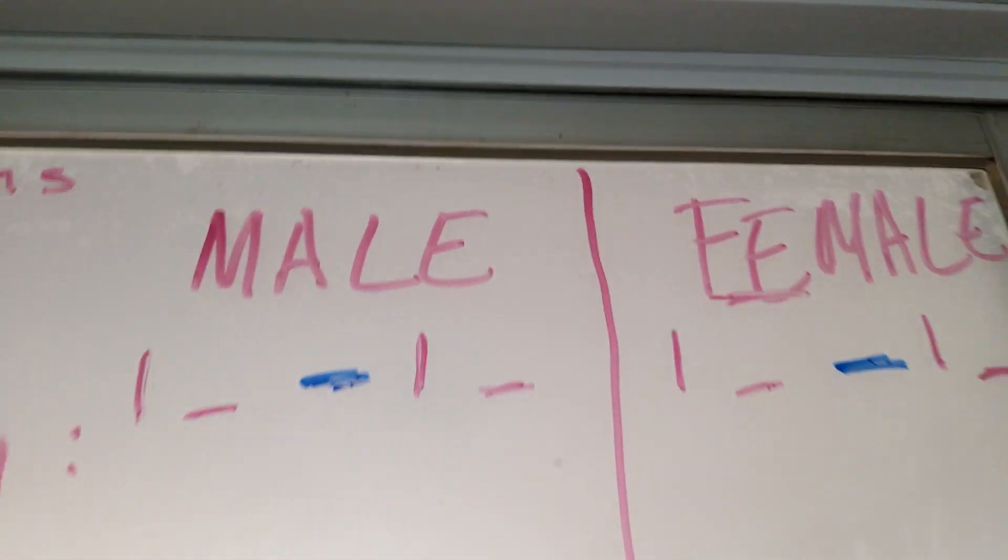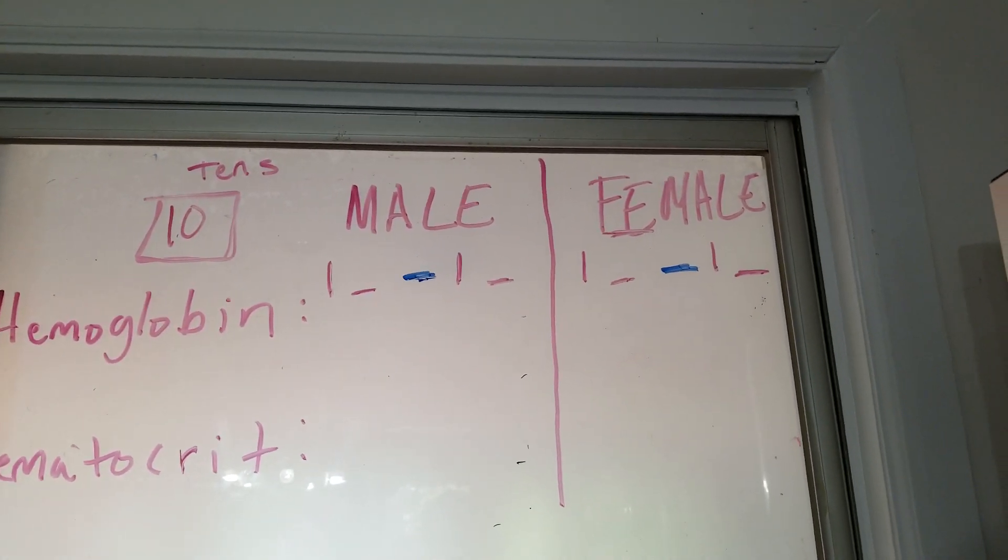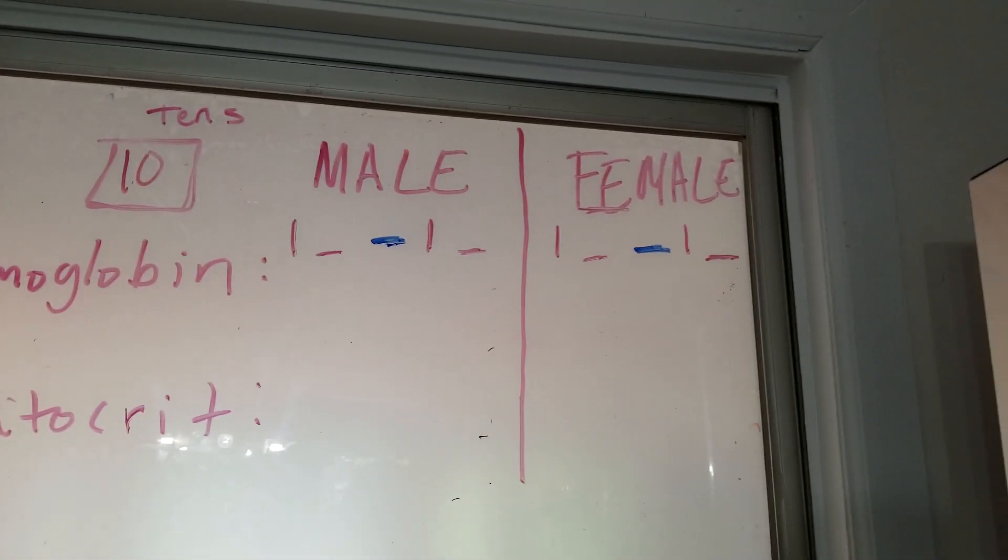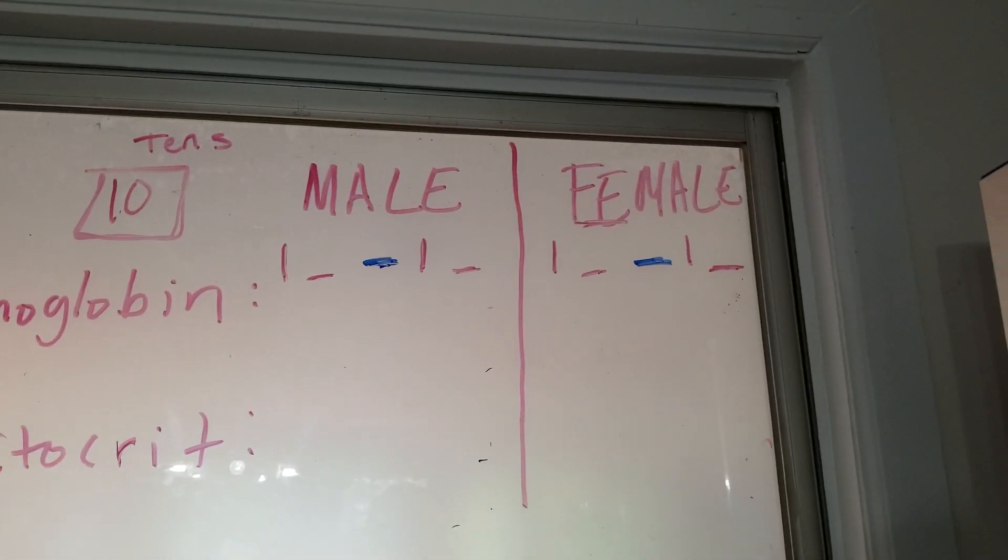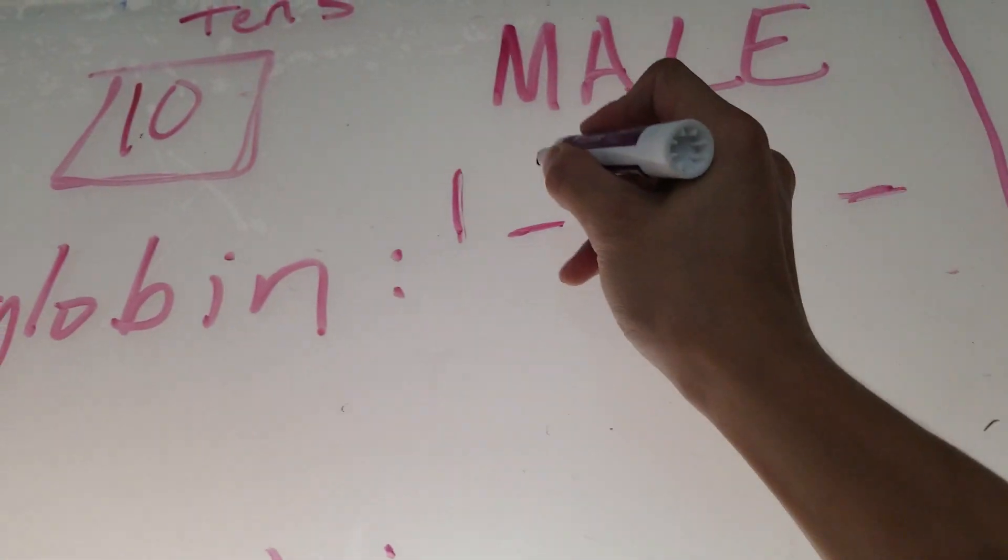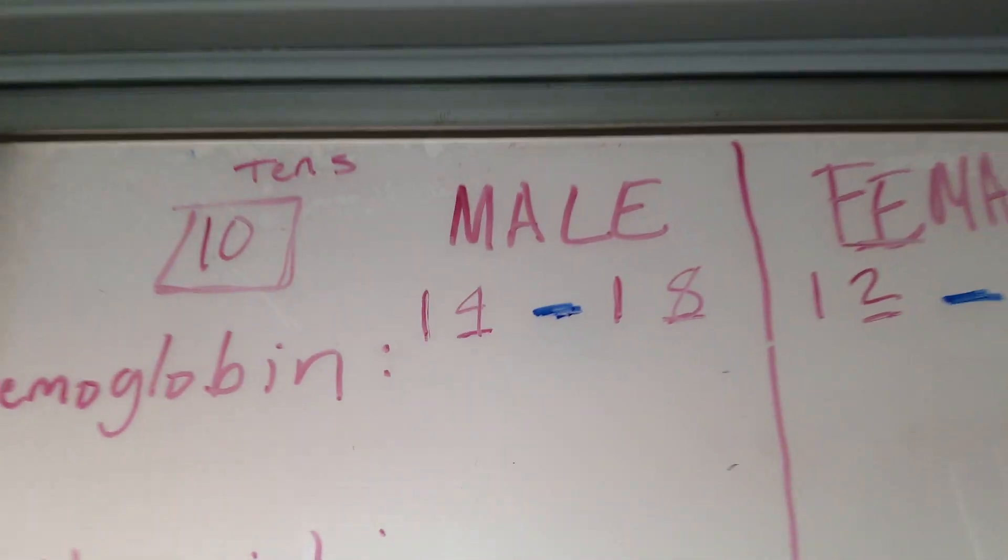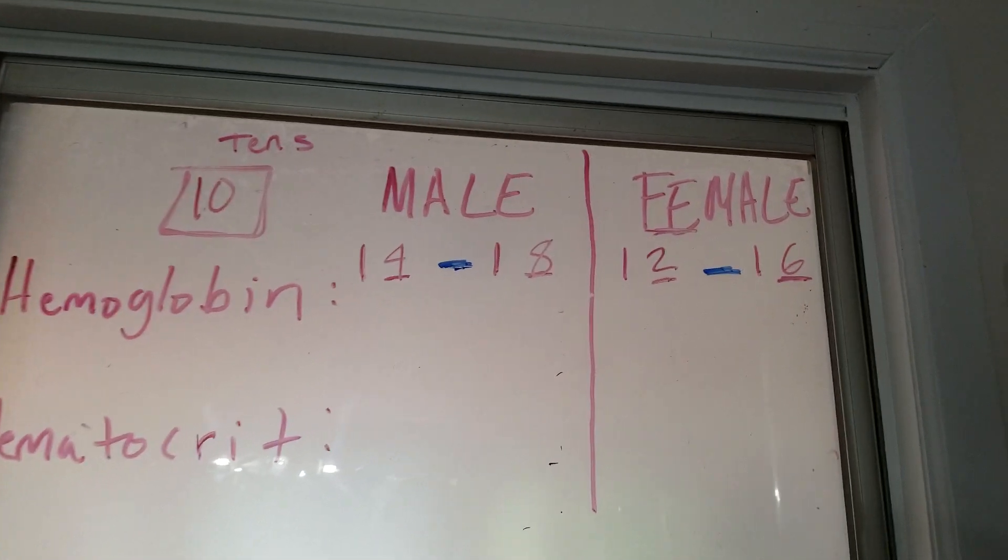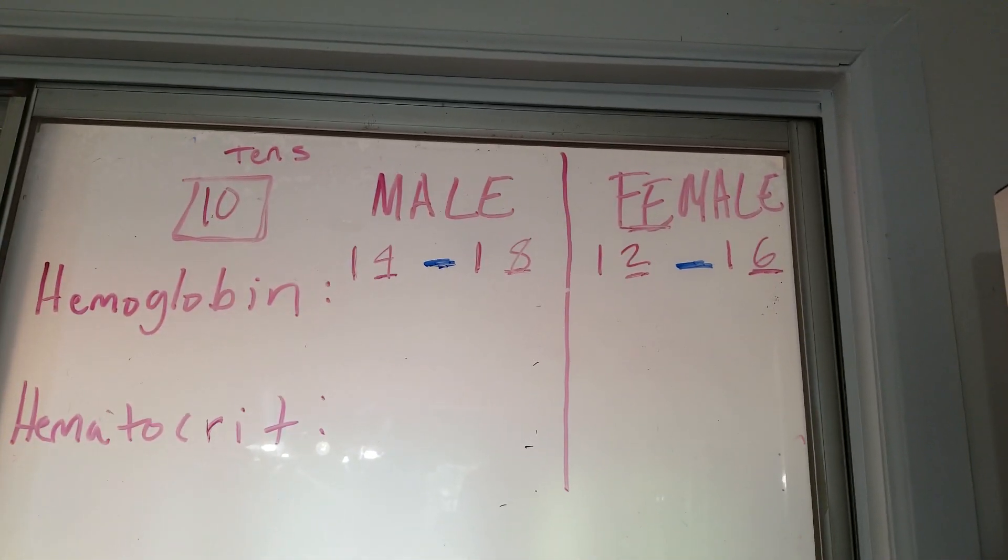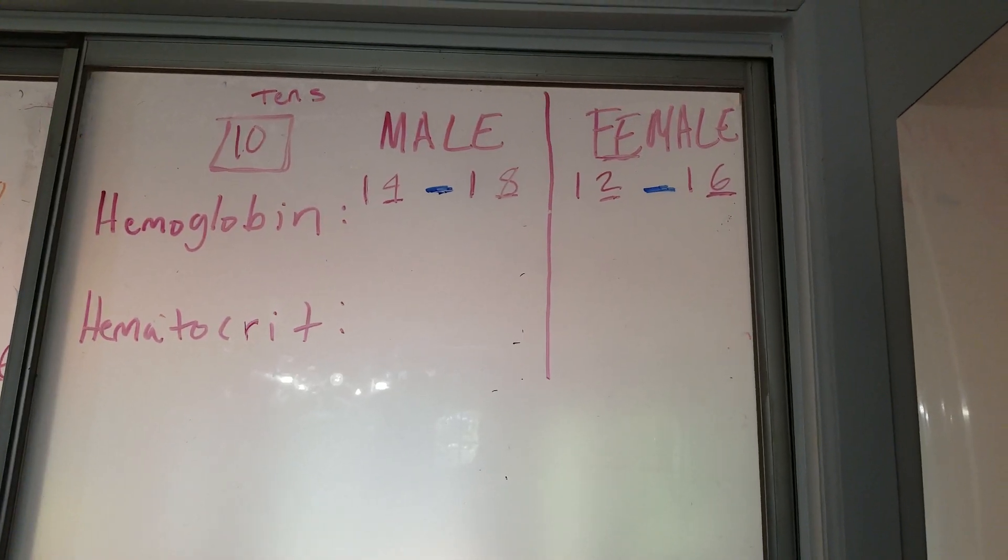So with females, females have two letters in it. And my mom always taught me to let females go first. So therefore, we're going to go by twos. So we're going to do two, four, six, eight. There you have it. You have hemoglobin for male and female. Fourteen to eighteen. Twelve to sixteen.